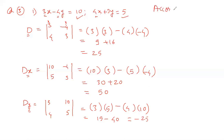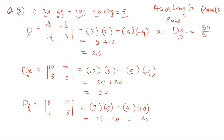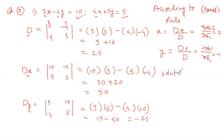According to Cramer's rule, x equals Dx divided by D. The value of Dx is 50 and D is 25, so x equals 2. The value of y equals Dy divided by D: Dy is minus 25 and D is 25, so y equals minus 1. Therefore, the solution for the given simultaneous equations is x equals 2, y equals minus 1.